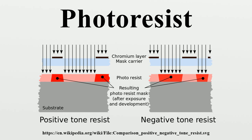The portion of the photoresist that is unexposed remains insoluble to the photoresist developer. A negative resist is the type of photoresist in which the portion exposed to light becomes insoluble to the photoresist developer. The unexposed portion of the photoresist is dissolved by the photoresist developer.